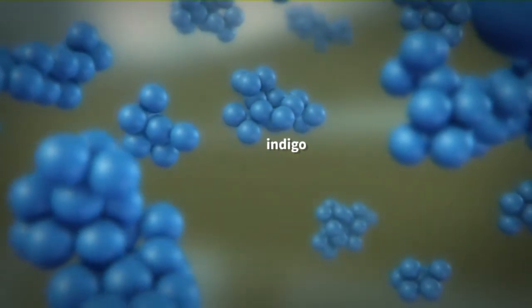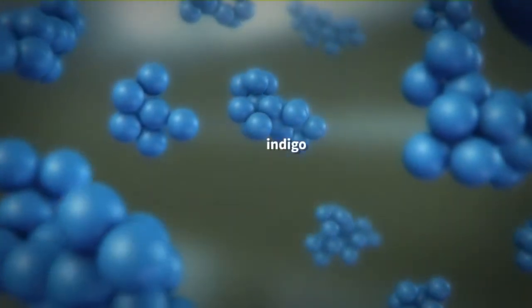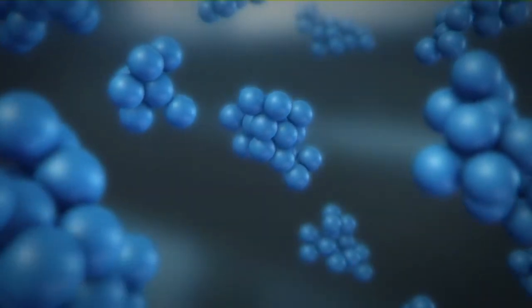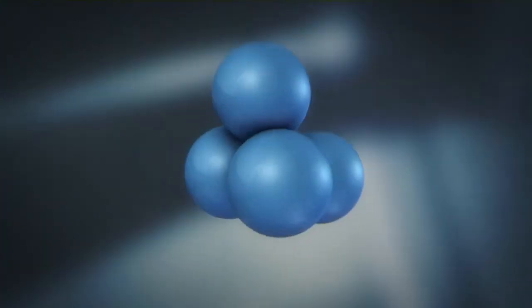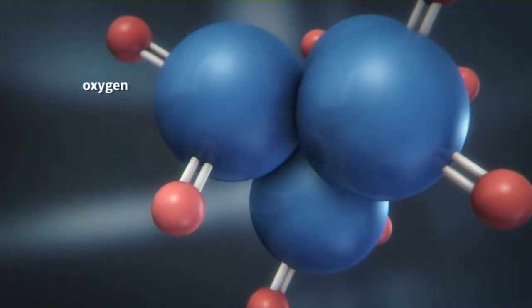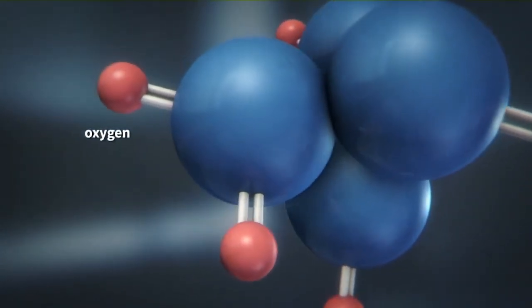Indigo, in its natural agglomerated state, is not soluble in water and in this state cannot penetrate into the fiber material. The molecules have to be separated to make them water soluble. This is done by reduction of the double bonded oxygen.